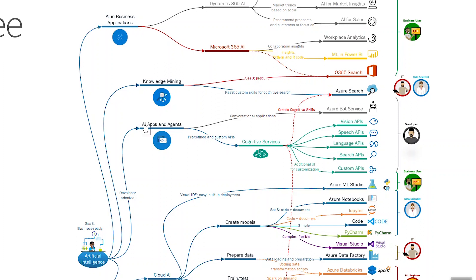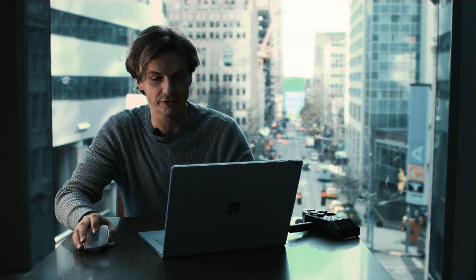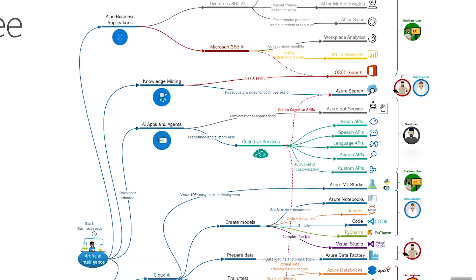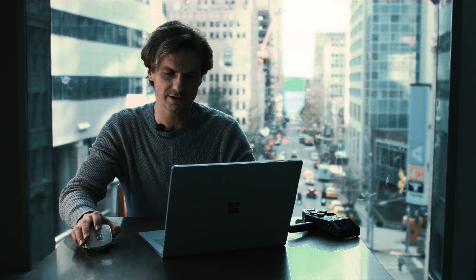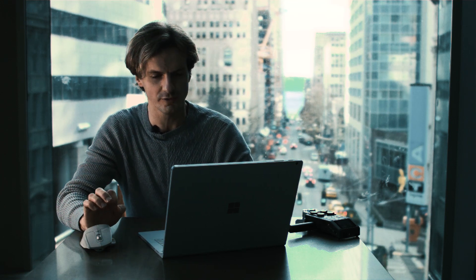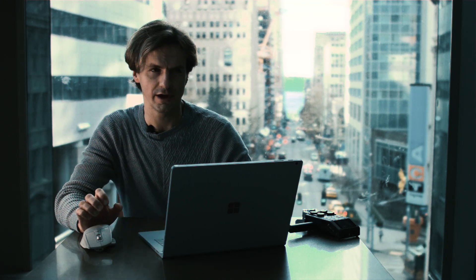Moving to applications and agents, one of the solutions — or frameworks — is Azure Bot Service, which allows developers to create applications with bot capabilities. Another is Cognitive Services, which are pre-built APIs in the areas of vision, image analysis, speech recognition, language, and search. There are also custom APIs, where you can train the APIs with your own data sets to tune the model for your specific business area.